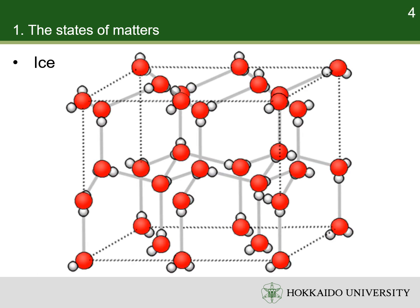For example, in ice, water molecules have low energy and are closely packed together. The hydrogen bonds between water molecules are so strong that the molecules and atoms cannot move freely but can only vibrate. As a result, without external force, ice has a stable, definite shape and volume.